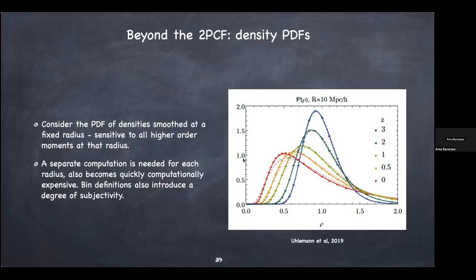Another approach is to look at the full density PDF — measure the number of galaxies inside a sphere placed at different parts of the universe and make a histogram. If it's Gaussian, which it is at high redshift, the two-point correlation function is a good measure. But at redshift zero the distribution is extremely non-Gaussian. The drawback of just measuring the PDF is that it's a histogram — the binning depends on your choice, it becomes subjective. So there are drawbacks to both approaches.